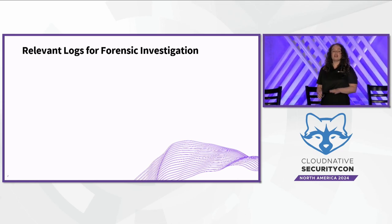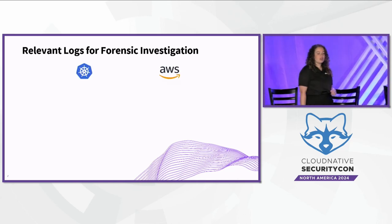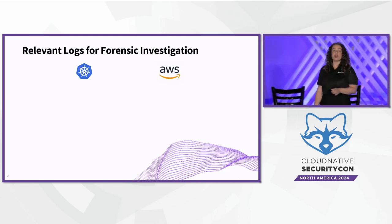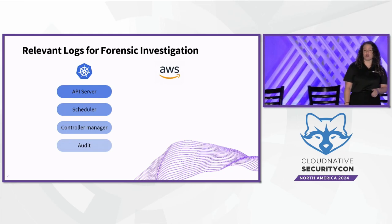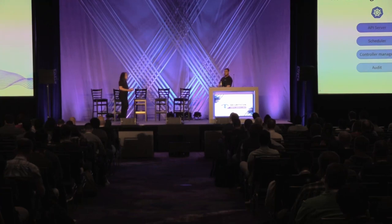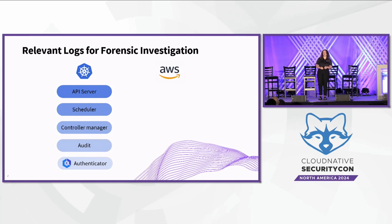Now that we've set the stage, let's dive into one of the most crucial aspects of performing a cyber investigation: the logs. Generally, the logs are divided into two groups — the Kubernetes ecosystem logs and the cloud provider logs, in our case AWS. In the Kubernetes ecosystem, we have the API server log that provides insights into cluster operations and API calls, the scheduler logs and controller manager logs that offer information regarding cluster state and scheduling tactics, the audit log that documents every action performed on the Kubernetes API server by different principals, and the authenticator log that records authentication attempts and access requests made to the Kubernetes API server by AWS's IAM identity management service.